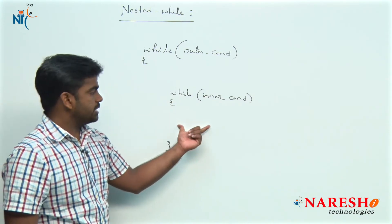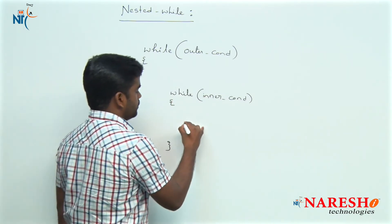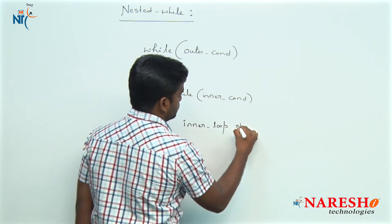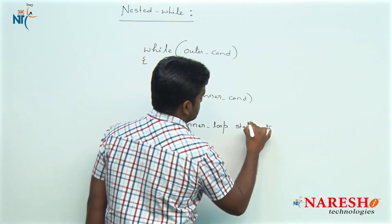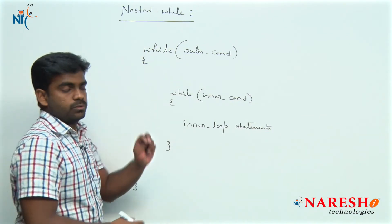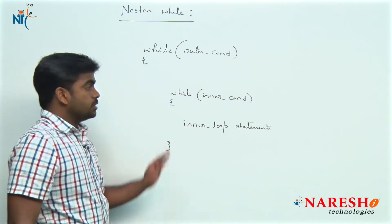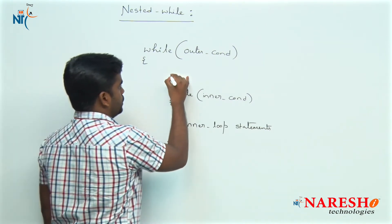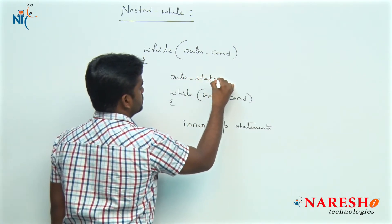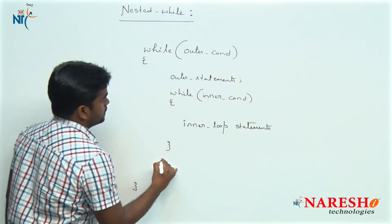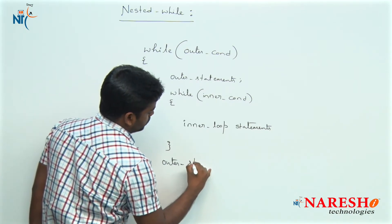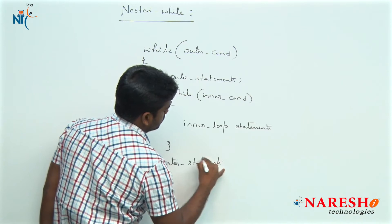We need to write all the statements belonging to this inner while loop — these are the inner loop statements. Next, in the outer loop you can also write outer loop statements. The inner loop belongs to the outer loop, and not only loops but general statements can also be written there.